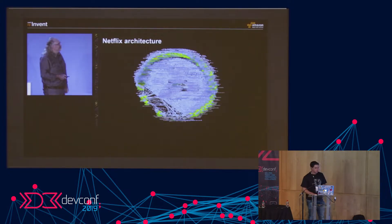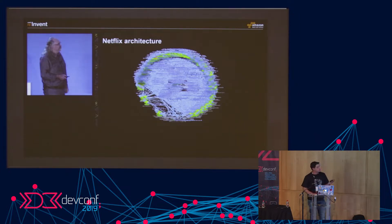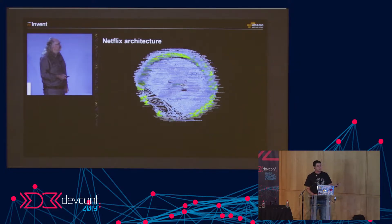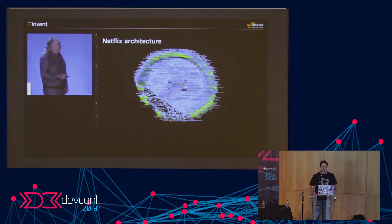If we look at microservice adoption — for example Netflix — this is a slide from AWS re:Invent 2017. This graph shows all of their microservices. At the time of this slide, they had 700 microservices. I'm sure in 2019 they have a lot more. It's definitely a pattern adopted and in use by big companies today.